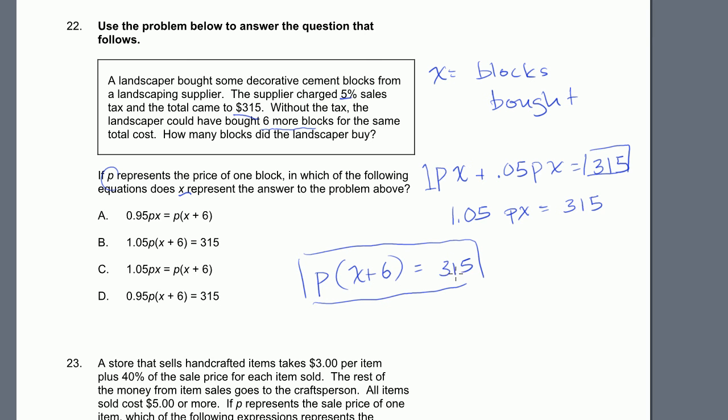If there was no tax for $315, he could have bought 6 more than he originally bought. So this first equation came from the first sentence. The second equation comes from this red sentence right here. And let's see if we see this anywhere. p times x plus 6 is equal to 315. I don't see that anywhere here, but we can do something interesting. We can use all of the information from the problem.